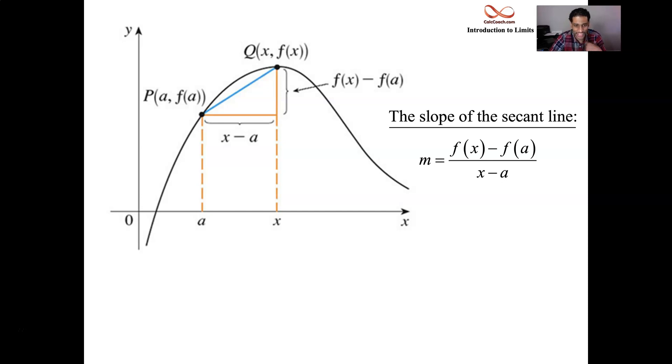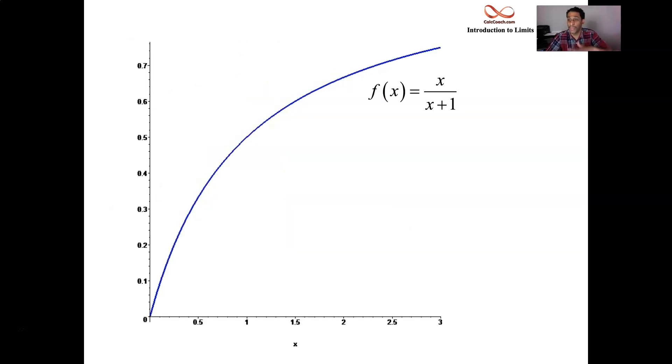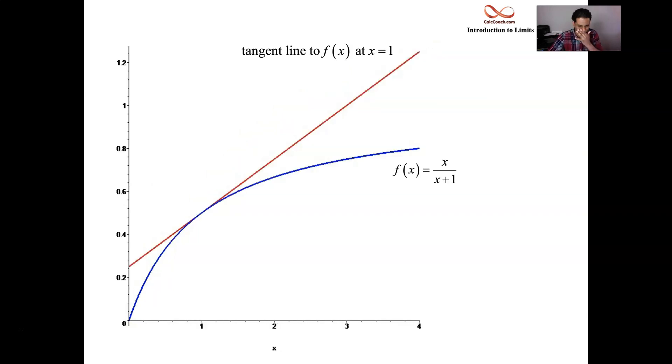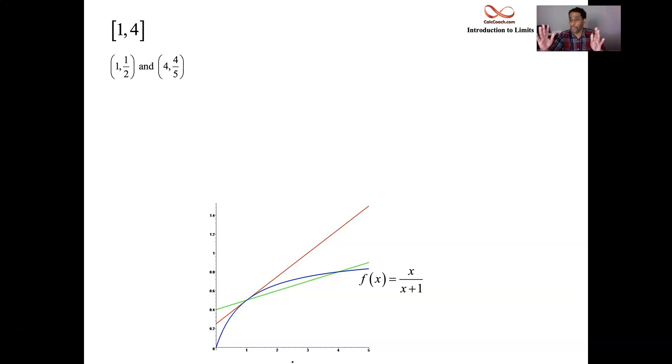What we want to do is go to a specific function and use it to calculate secant line slopes as a means to figure out the slope of a tangent line. So our function is going to be x over x plus one. The point of tangency that we're interested in is when x equals one. And so x equals one, we have this tangent line. I'm going to find the slope of that line. And the function is x over x plus one. We're first going to start with the interval from one to four.